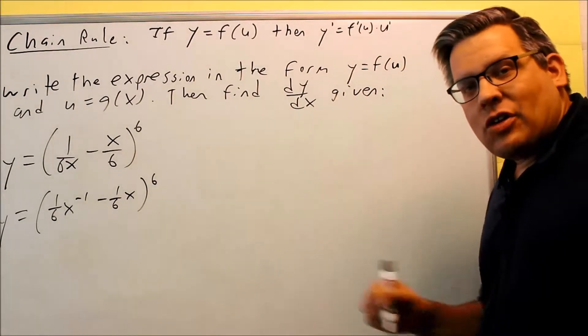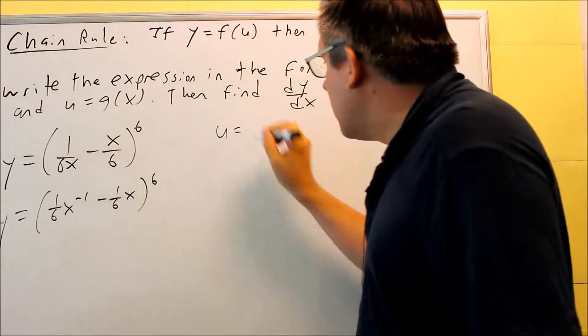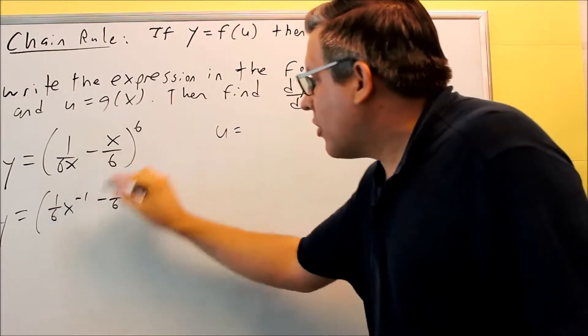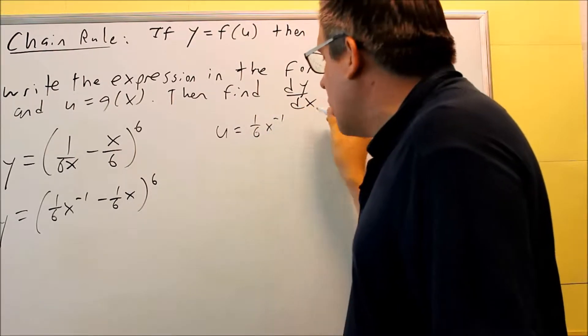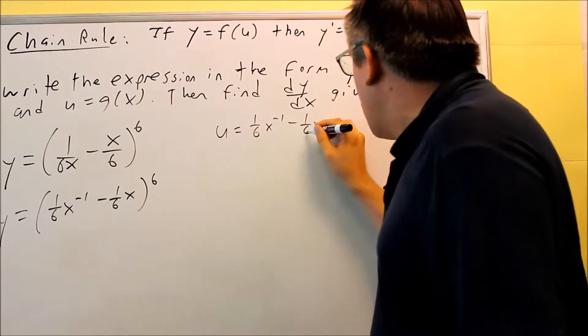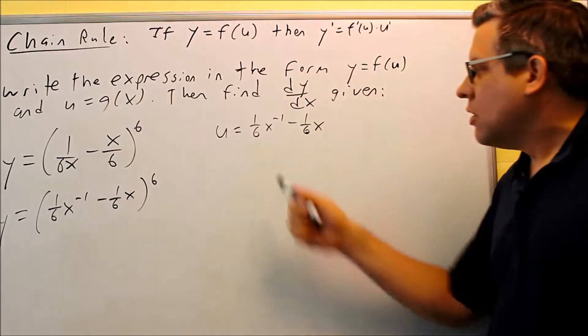Let's identify the U and the F of U. The U is the part that we have on the inside. So in this case, my U is 1 over 6x to negative 1 minus 1 over 6x. That's my U.